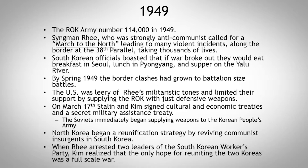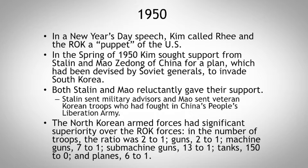On March 17th, 1949, Stalin and Kim met and signed cultural, economic, and secret military assistance treaties. The Soviets immediately began supplying the North Korean army with weapons. North Korea began a reunification strategy by reviving communist insurgents in South Korea. When Rhee arrested two leaders of the South Korean Workers Party, Kim realized reunification would require a war. In Kim's New Year's Day 1950 speech, he called Rhee and the Republic of Korea a puppet of the United States. In spring 1950, Kim went to Moscow and talked with Stalin, asking for support. Stalin agreed on the condition that Kim also get support from Mao in China — who had just defeated the nationalists. Both reluctantly agreed. Stalin sent military advisors, and Mao sent about 35,000 veteran Korean troops who had fought in China's People's Liberation Army. The North Korean Armed Forces had a significant superiority over the Republic of Korea forces.